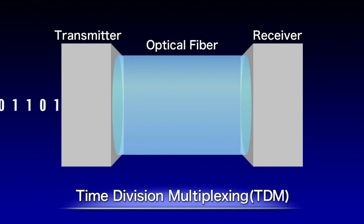In the early period, the optical communication systems used time division multiplexing, or TDM. This system replaces the 1 and 0 of the digital signals with the on and off of the optical signals.